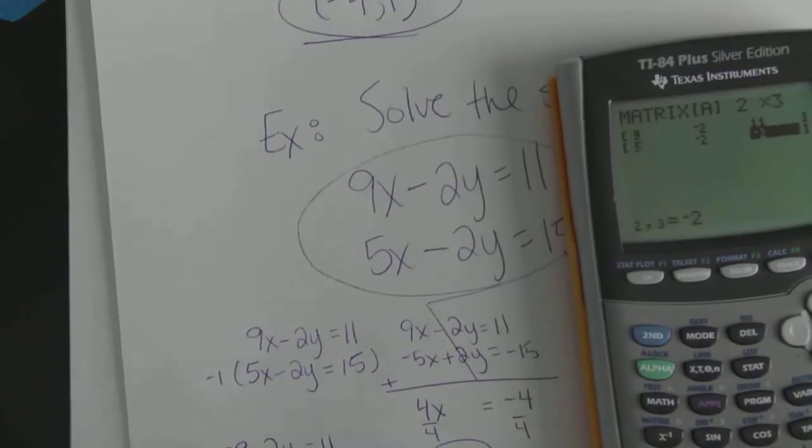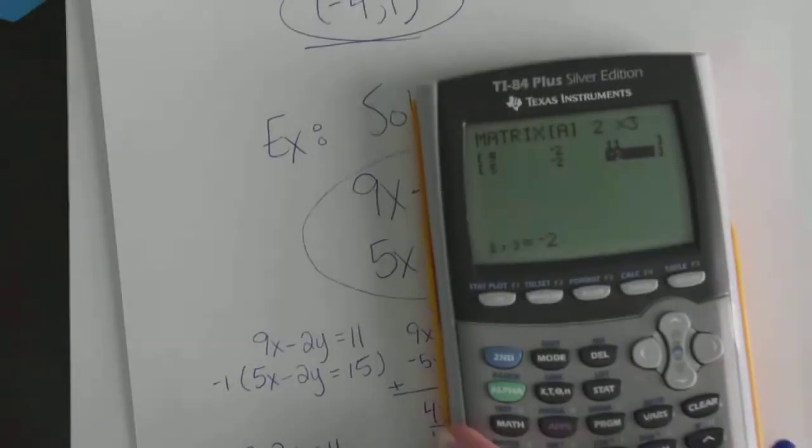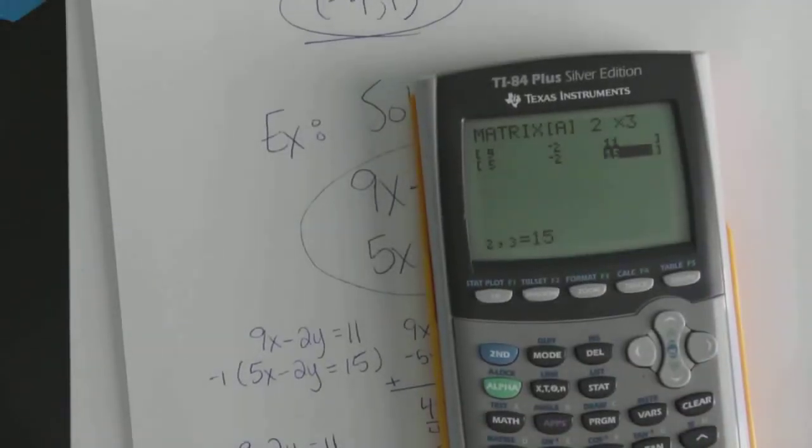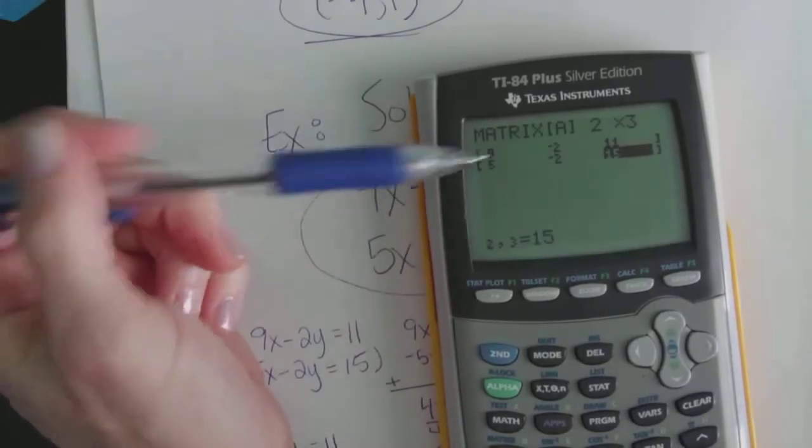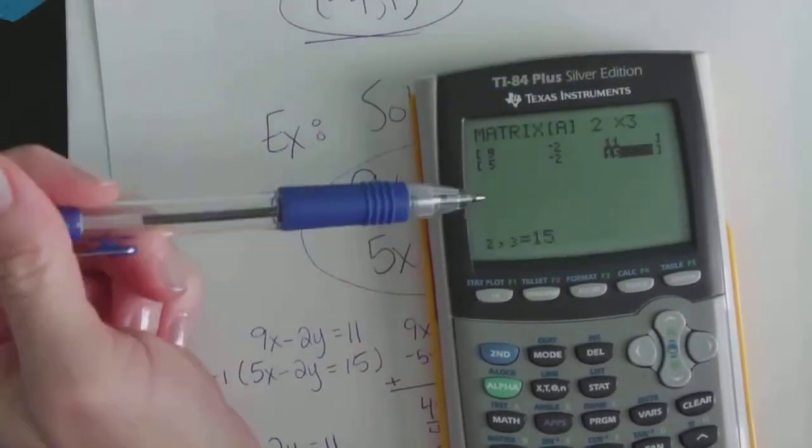And an 11. Bottom row. A 5. Another negative 2. And finally a 15.